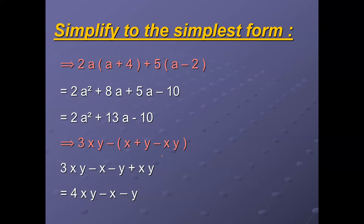Next equation: 3xy minus bracket x plus y minus xy. Here we have a negative before the bracket. Negative before the bracket means change the sign of each term in the expression after the negative. So x becomes negative x, y becomes negative y, and negative xy becomes positive xy. So we have 3xy minus x minus y plus xy. The like terms are 3xy and xy: 3xy plus xy equals 4xy. And we have negative x and negative y remaining.